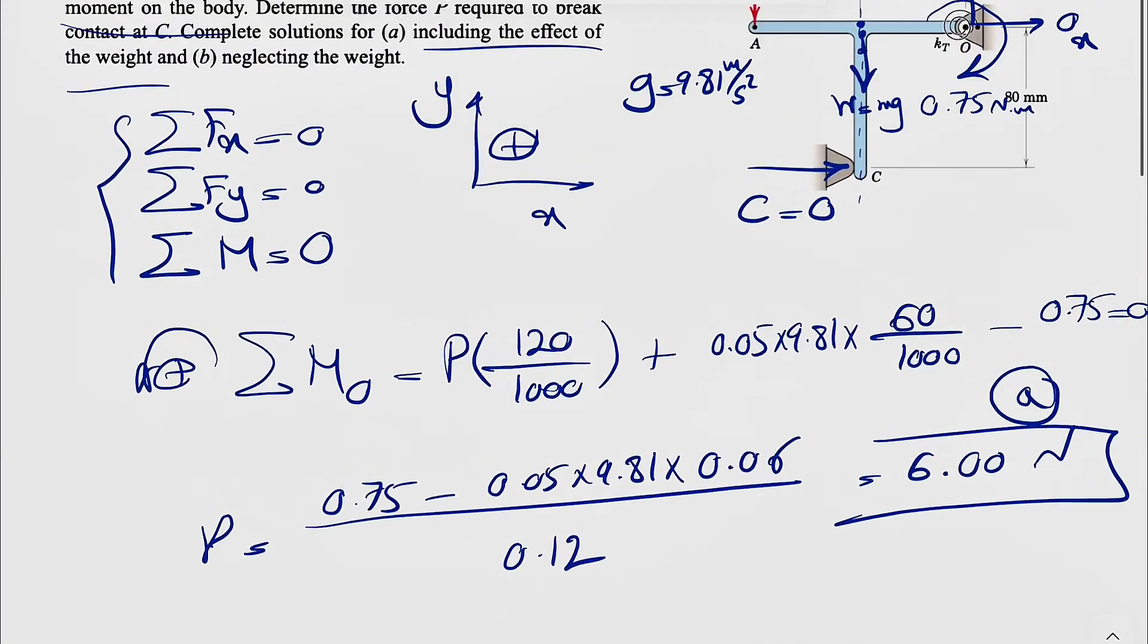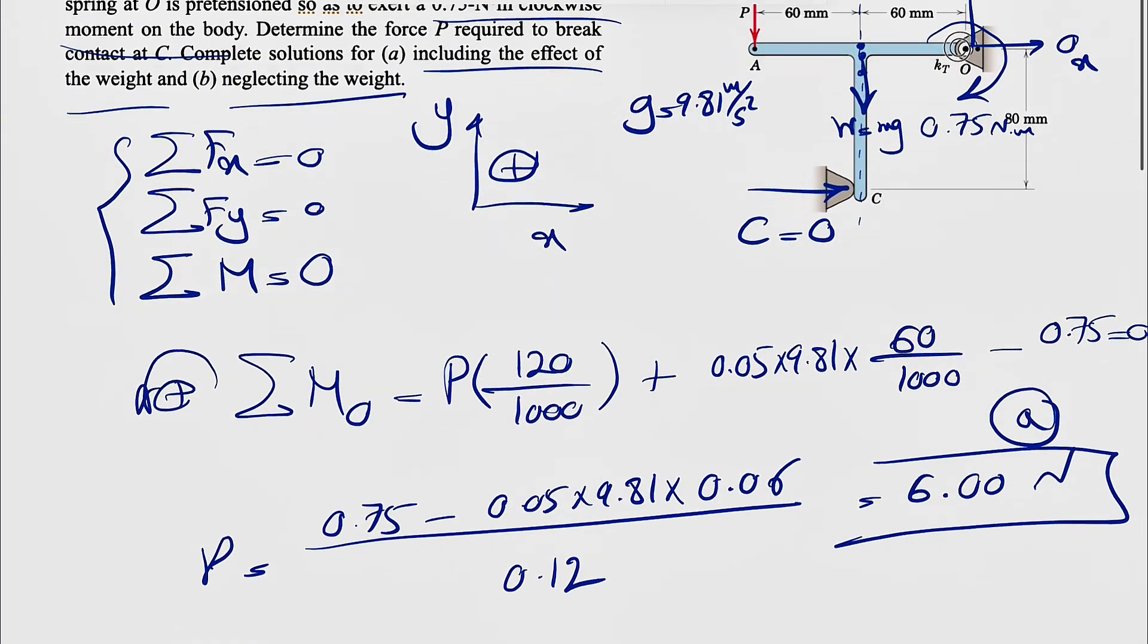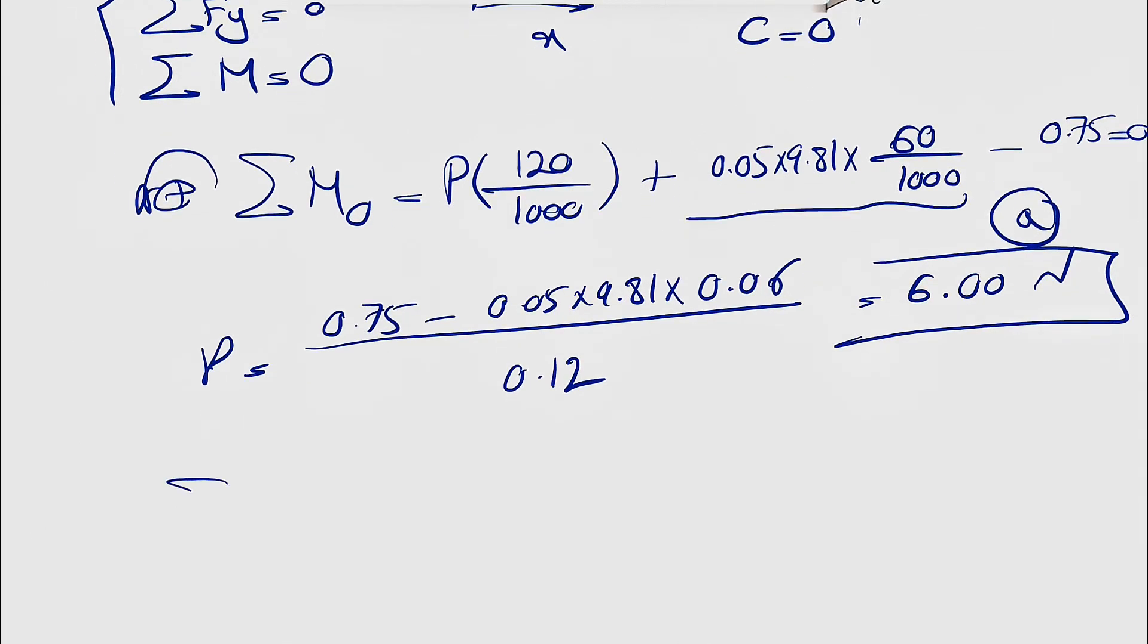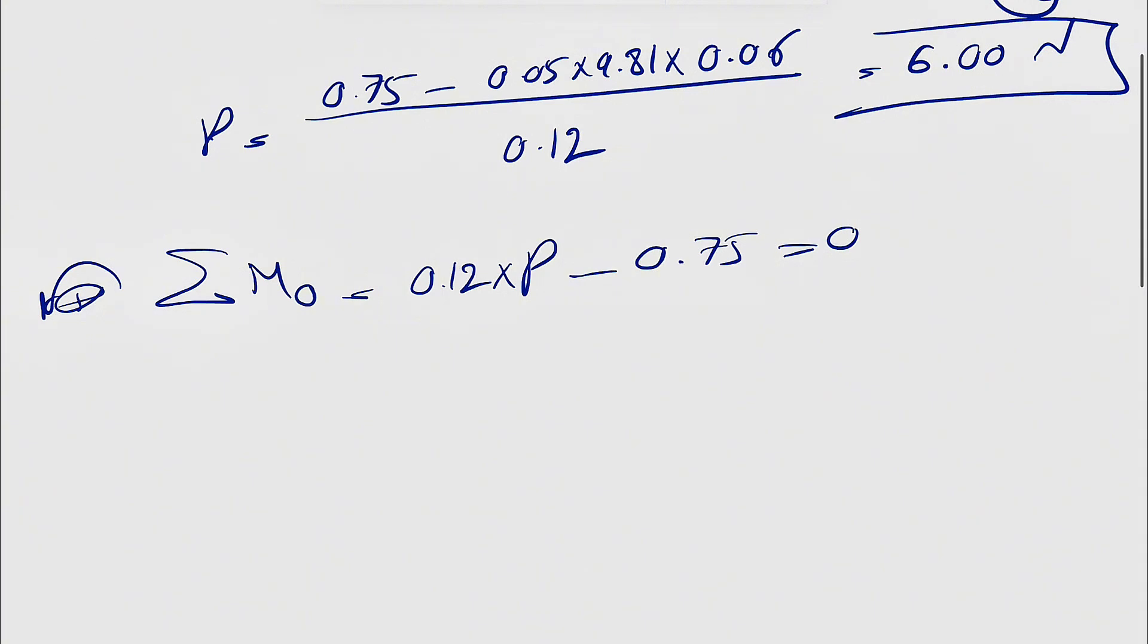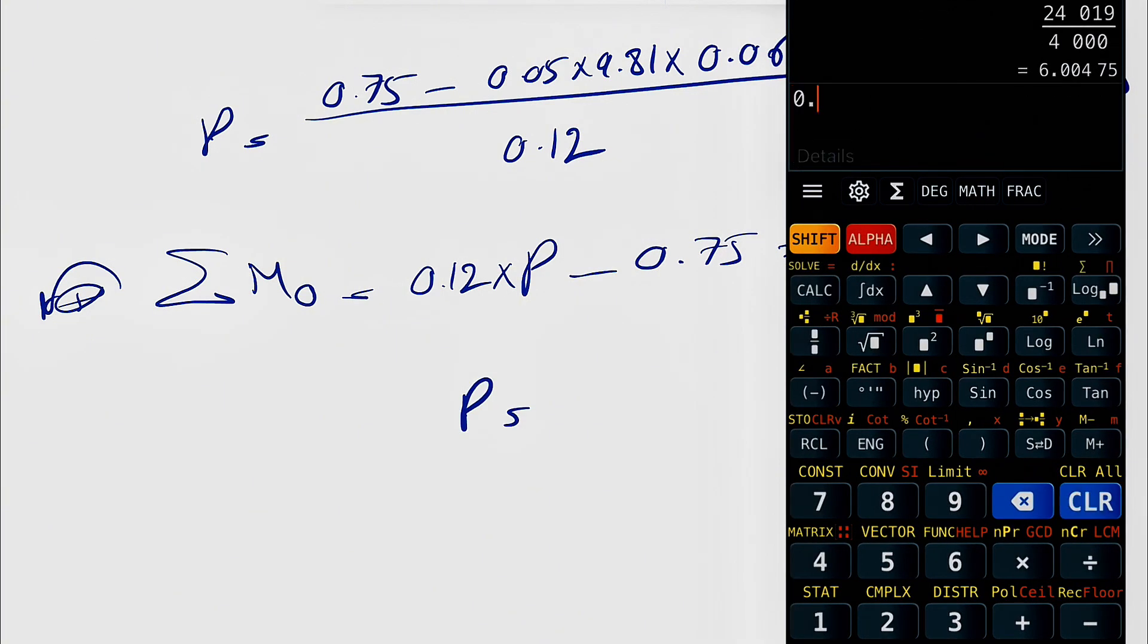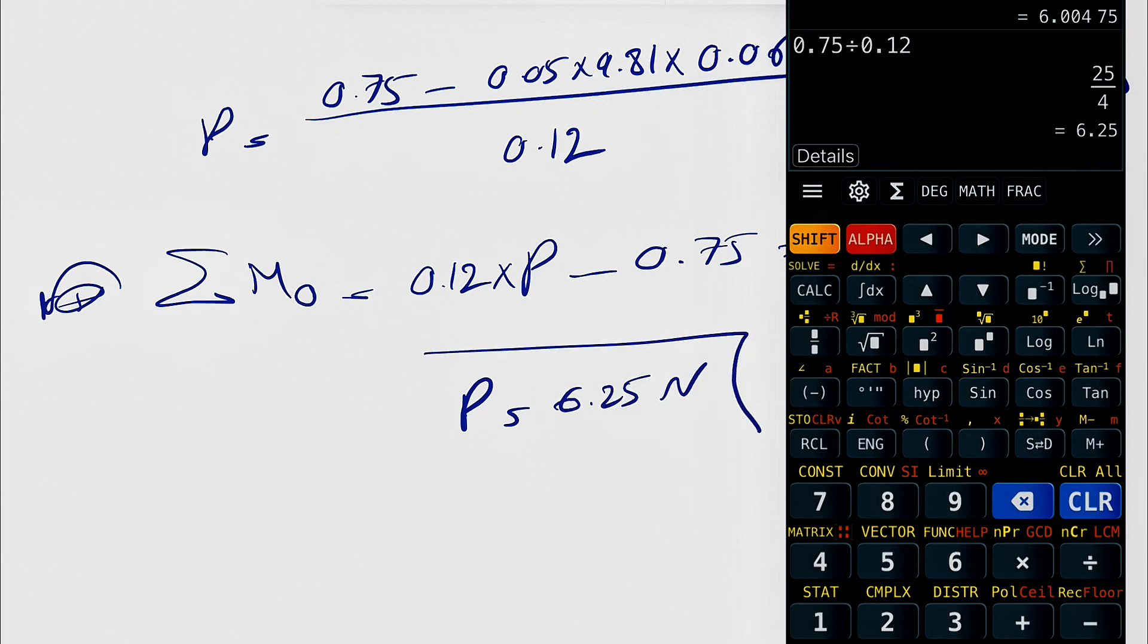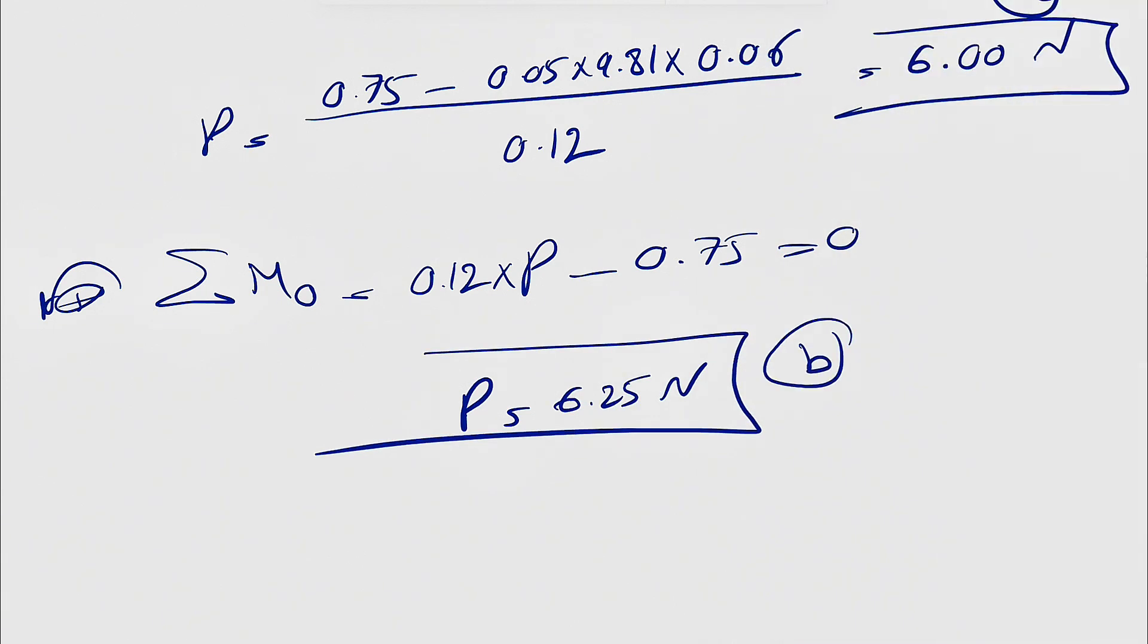And for the B part of the question, it will be very similar, we just don't have the weight, so we don't need this part. We're going to do the moment about O again. We're going to have 0.12 times P minus 0.75 equals 0. So our P here would be 0.75 divided by 0.12. That's going to be 6.25 Newtons, and the final answer for the B part of the question.